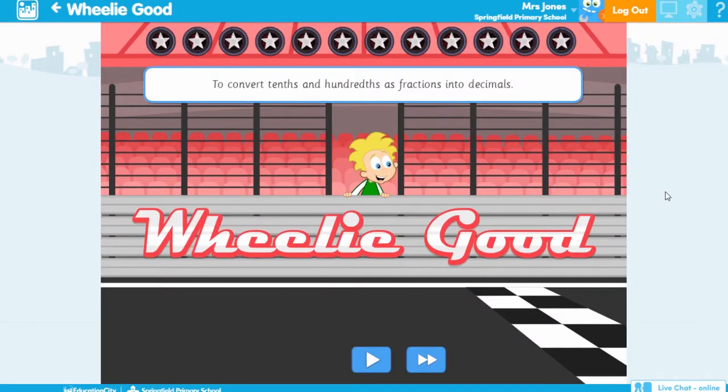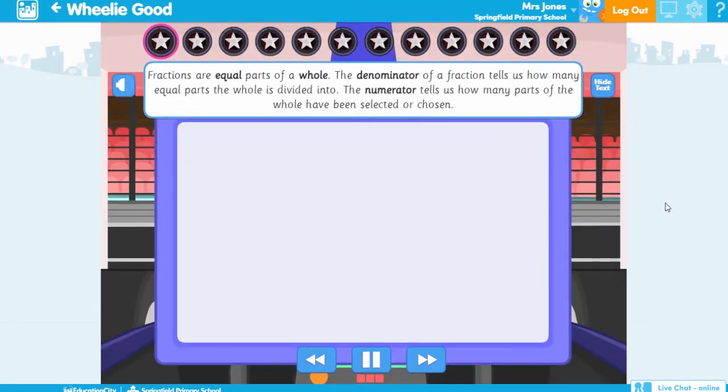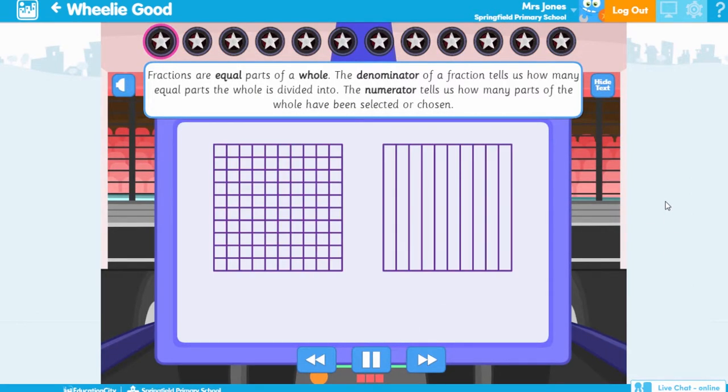First I'd use a learn screen called Wheelie Good which is all about converting fractions to decimals. Animated learn screens introduce and reinforce topics or concepts. They can be used by individual students or as a whole class to help them gain a thorough understanding of a topic. They're also great for revision as they take students through a concept step by step.